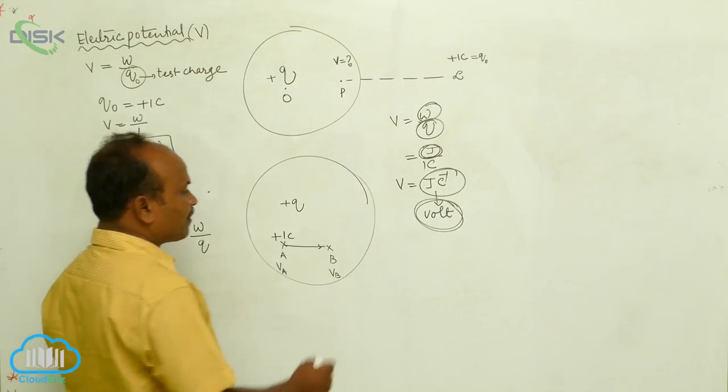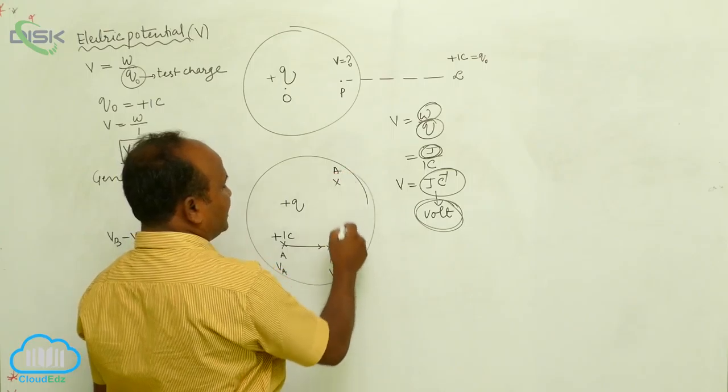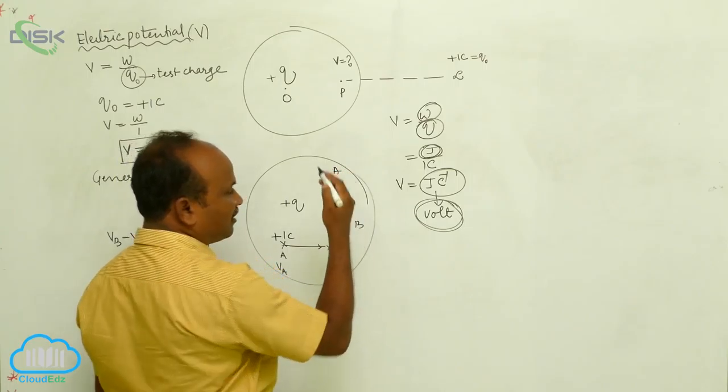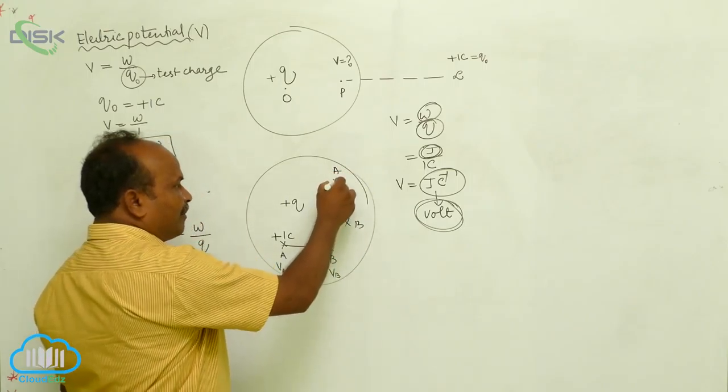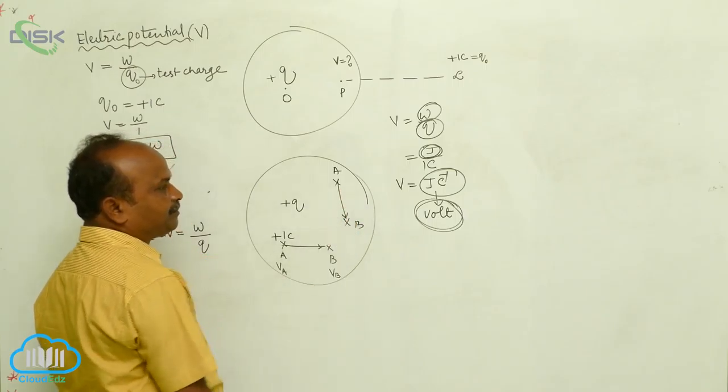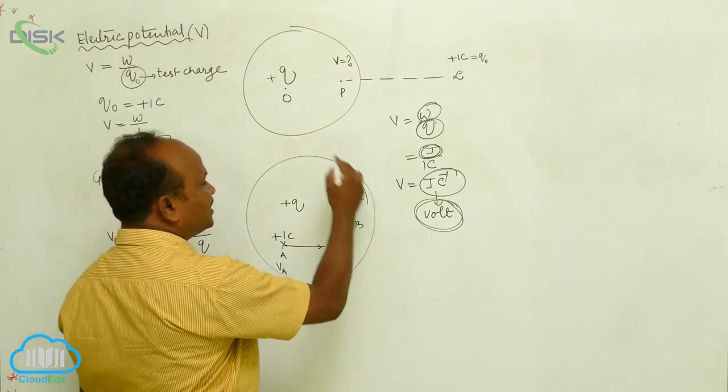Let us consider. Now there is a point A. There is a point B. From A point to B point, one coulomb of charge is moving.